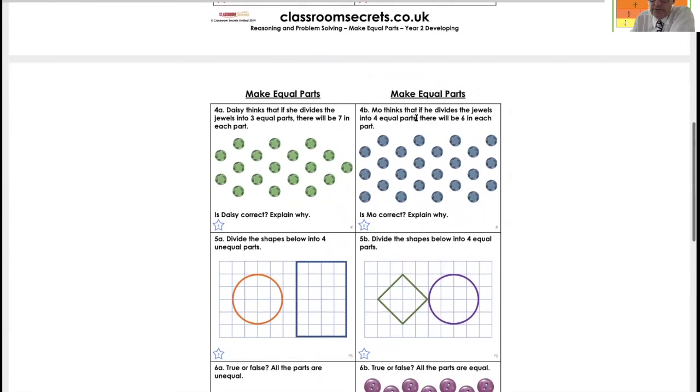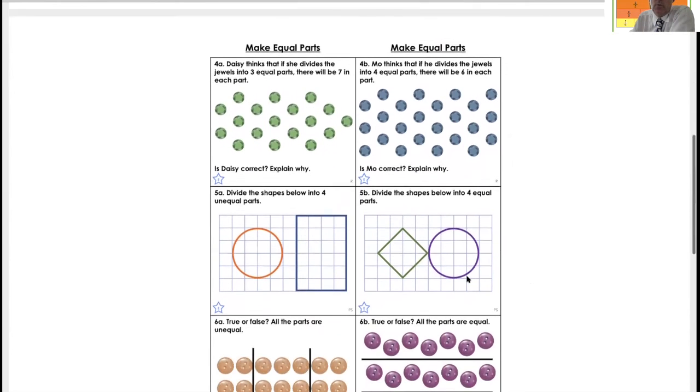Mo thinks if you divide the jewels into four equal parts, there will be six in each part. Let's circle six. One, six. Two, six. Three, six. Four. Hmm.